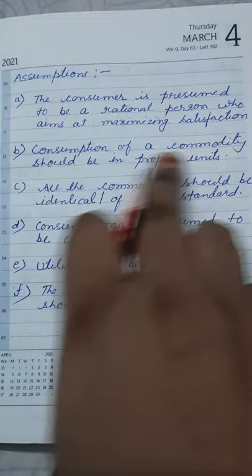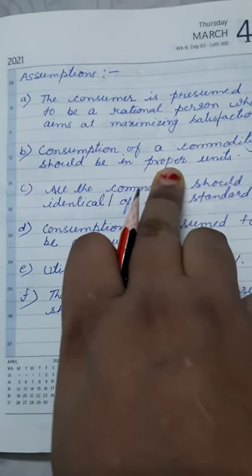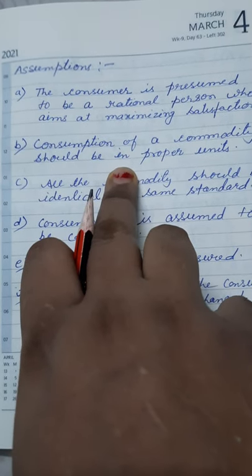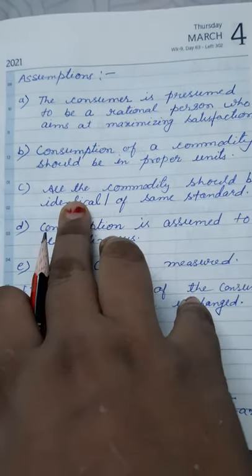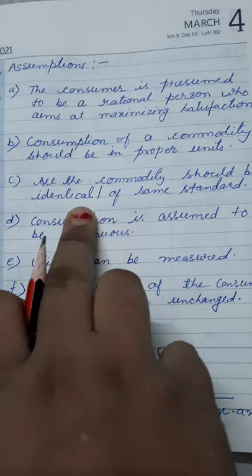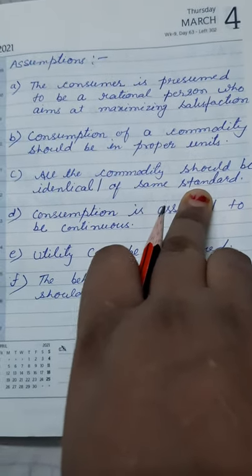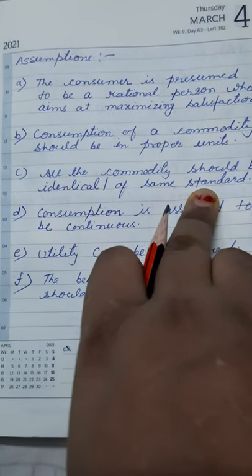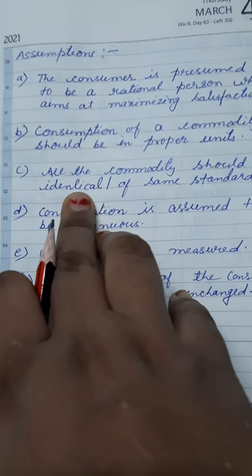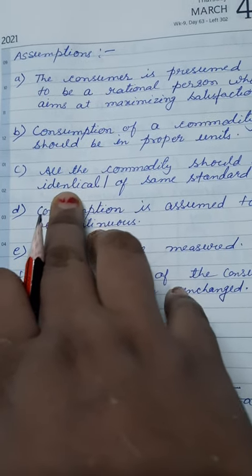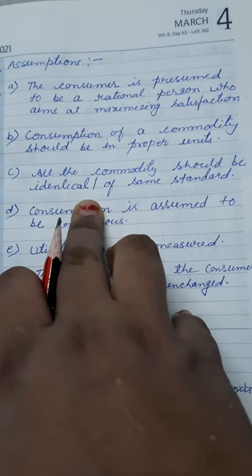Consumption of a commodity should be in a proper unit. When I am telling you one glass of water, not one spoon of water. One cup of tea, not one spoon of tea. The measurement of the goods should be in a standard unit or proper unit. All the commodities should be identical, of the same standard. If I am repeating the consumption of water for you, every time I am giving the same water, not cold water, then lukewarm water, then hot water. It is of the same taste and the same texture.